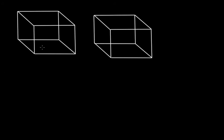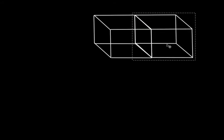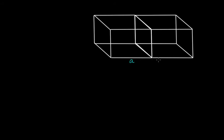Now imagine we have two identical cubes with the same side length a — same size, shape, and volume. If we take the first cube and join it with the second cube, what will be the total surface area of the resulting shape, where a is the length of one side of each cube?